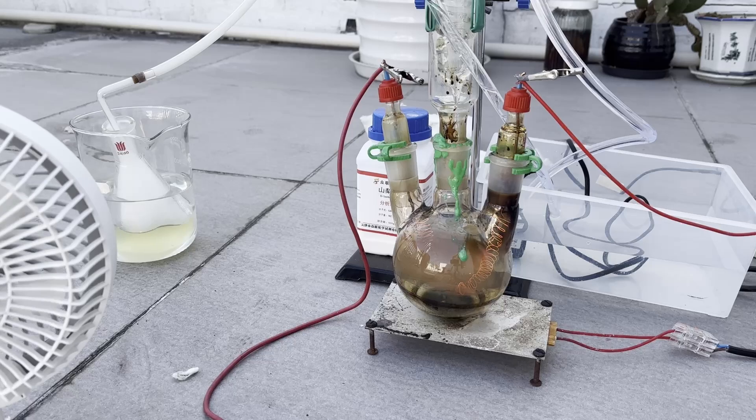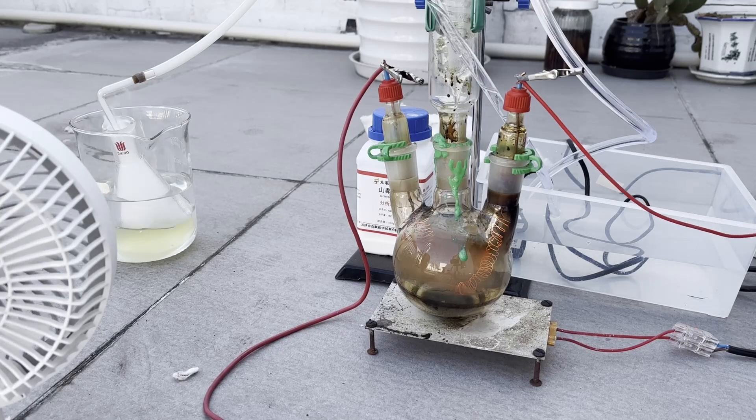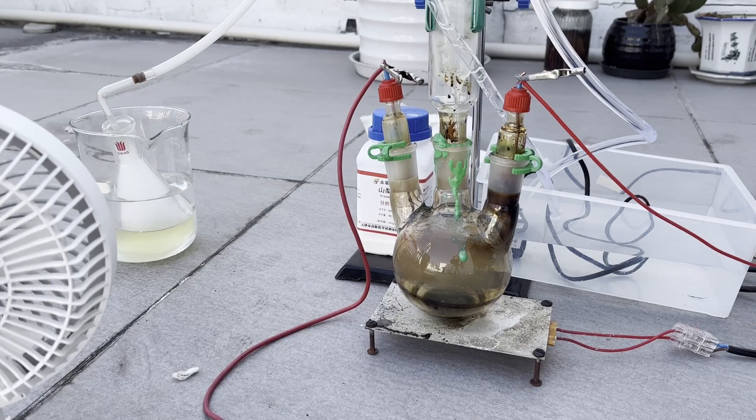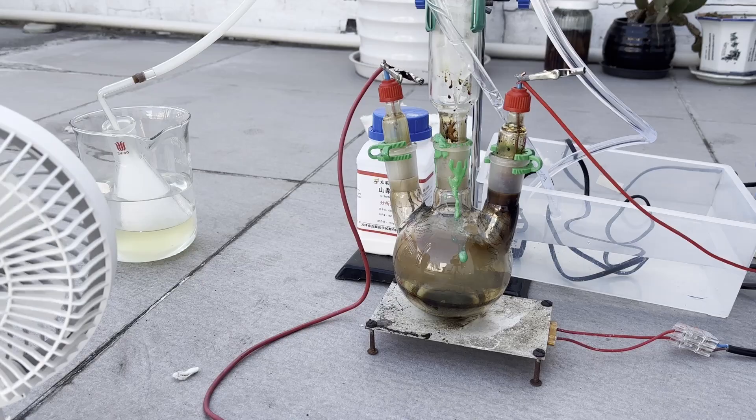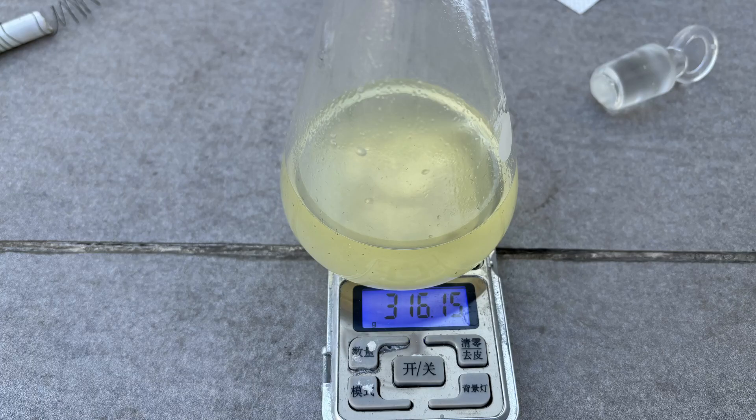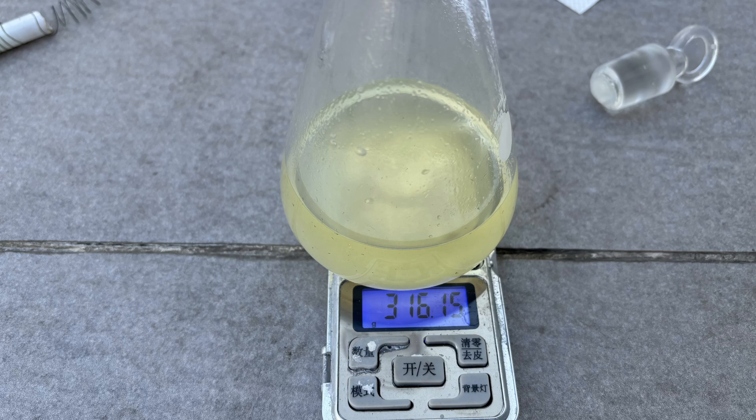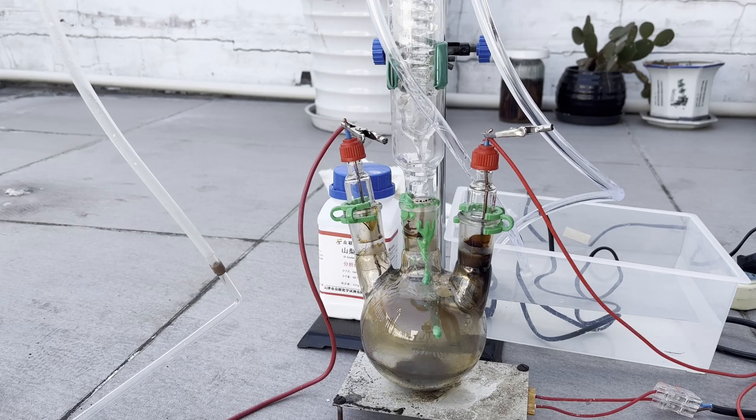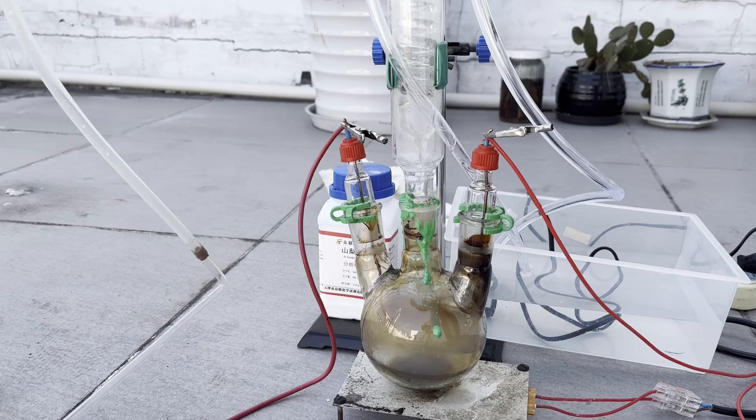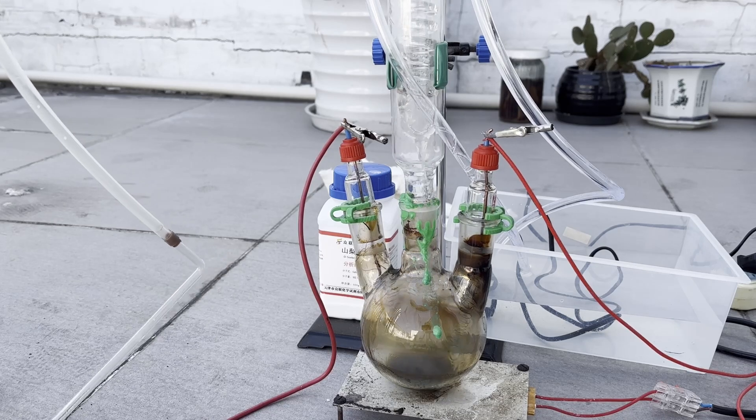After around 50 minutes, the acetone is nearly depleted and a lot of tar formed in the flask, so I turn off the filament and allow everything to cool. The total mass of the conical flask and its contents is now 316 grams, which means that it has gained 40 grams of weight, but a large portion of this is just acetone and not ketene. So I decided to add some more acetone to the lamp and run it for a bit longer.